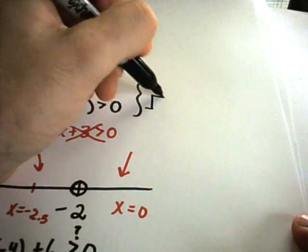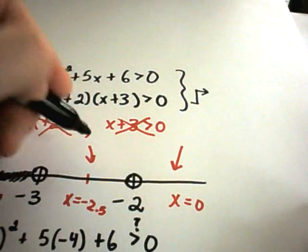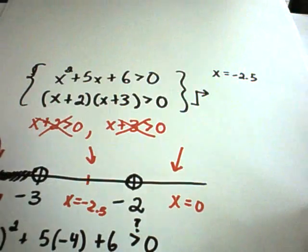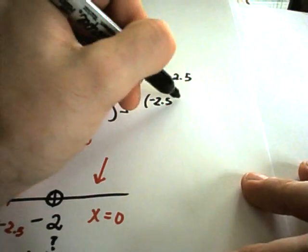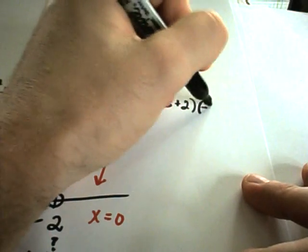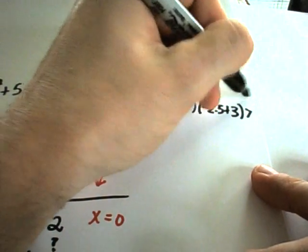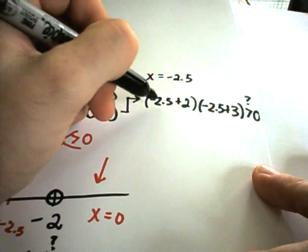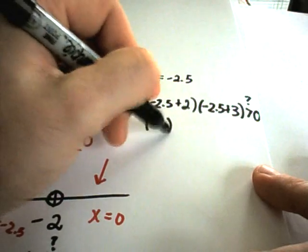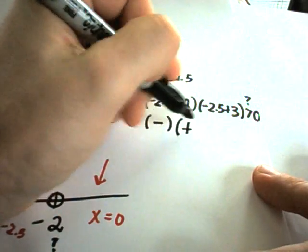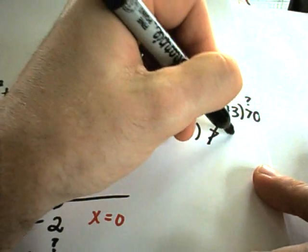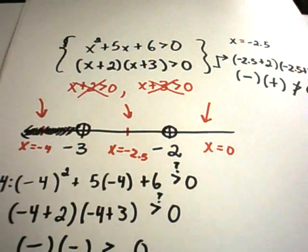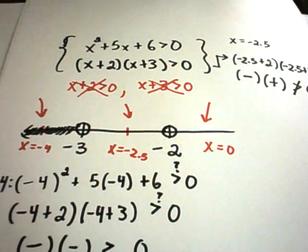Testing x = -2.5: plugging into the factored form gives (-2.5 + 2)(-2.5 + 3). Now -2.5 + 2 is negative, and -2.5 + 3 is positive. A negative times a positive is negative, which is not greater than 0. So there is no number between -3 and -2 that will satisfy the inequality.